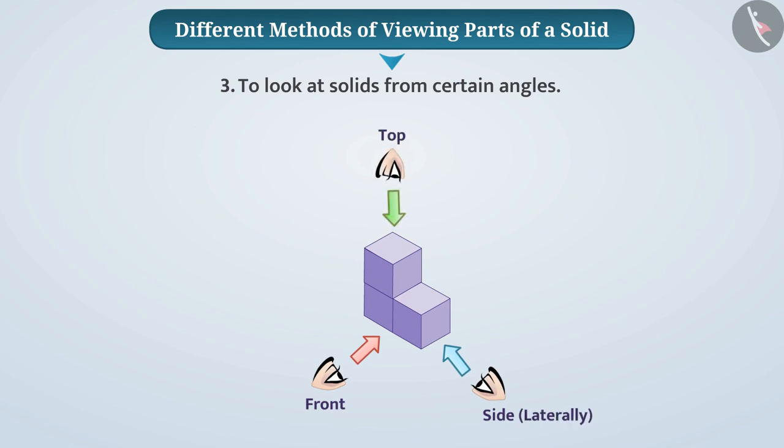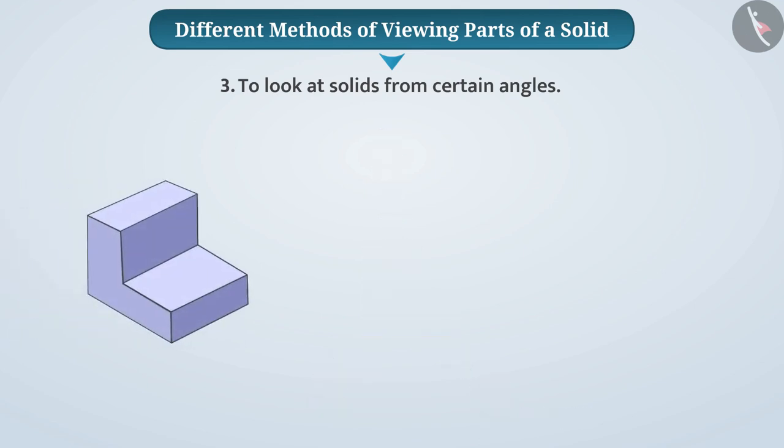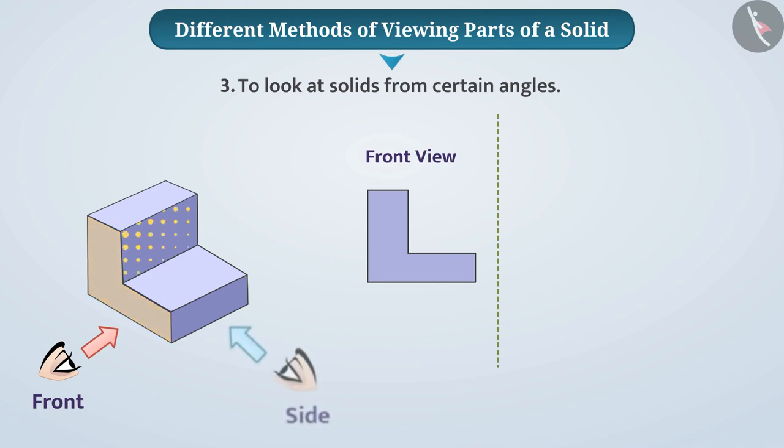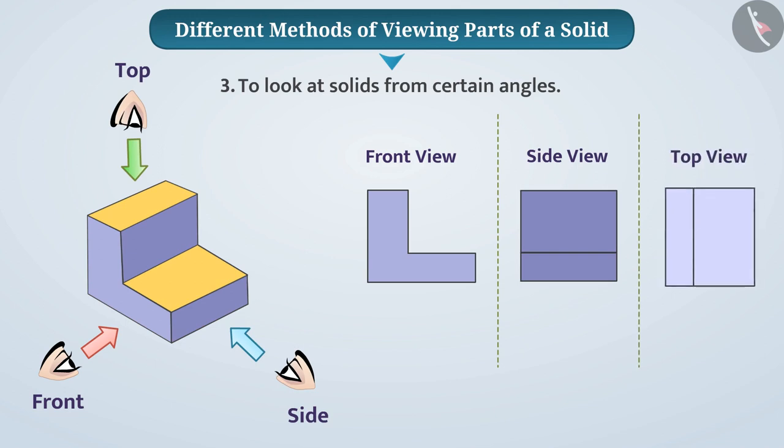Then, we draw the shape of visible scenes. Look at this figure. When viewed from the front, we get the front view in this way. Similarly, when we look sideways, we get side view in this way. And when viewed from above, we get the top view in this way.